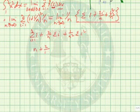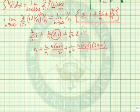Here we have plus 2 over n. The summation of i is n times n plus 1 all over 2. Plus, here we have, 1 over n squared times n times n plus 1 times 2n plus 1 all over 6.